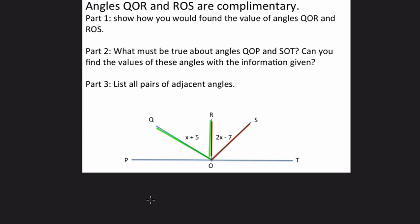So my first step is to say, well, if you're saying X plus 5 is QOR, and 2X minus 7 is ROS, if we add them up, we should get 90 degrees. They're complementary.